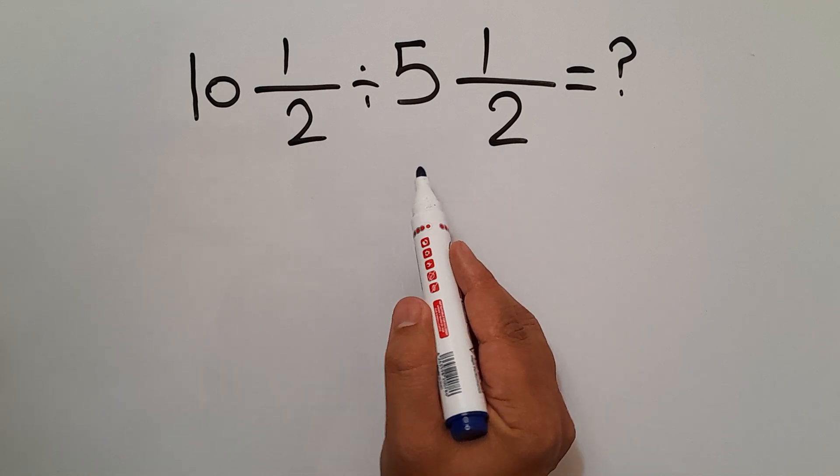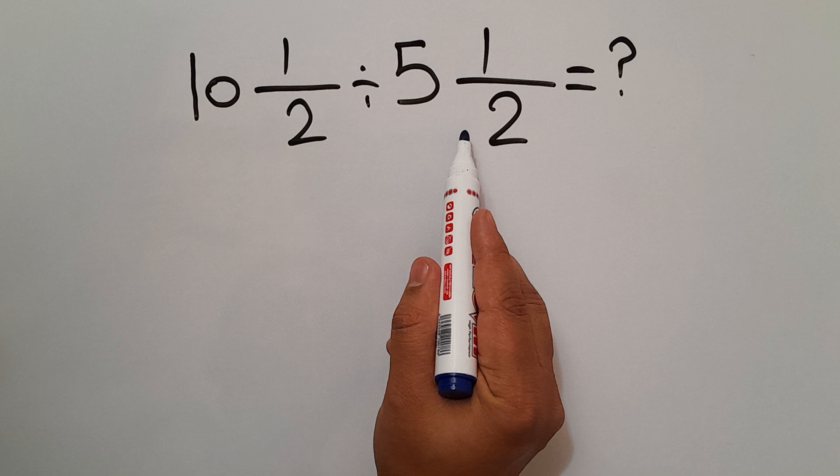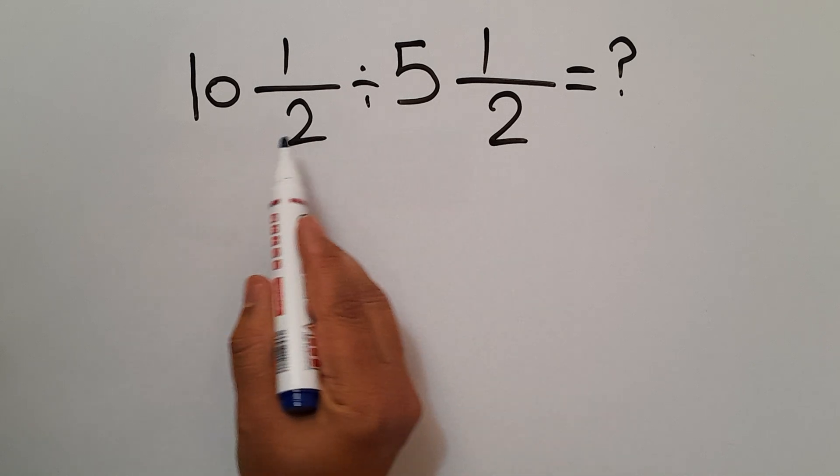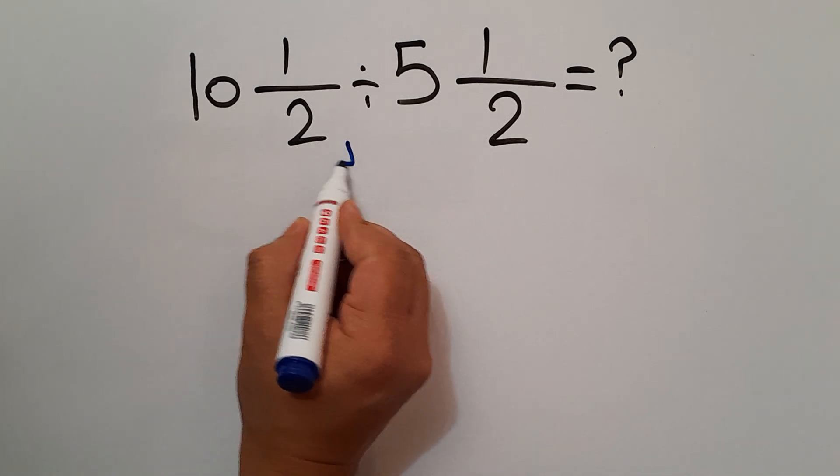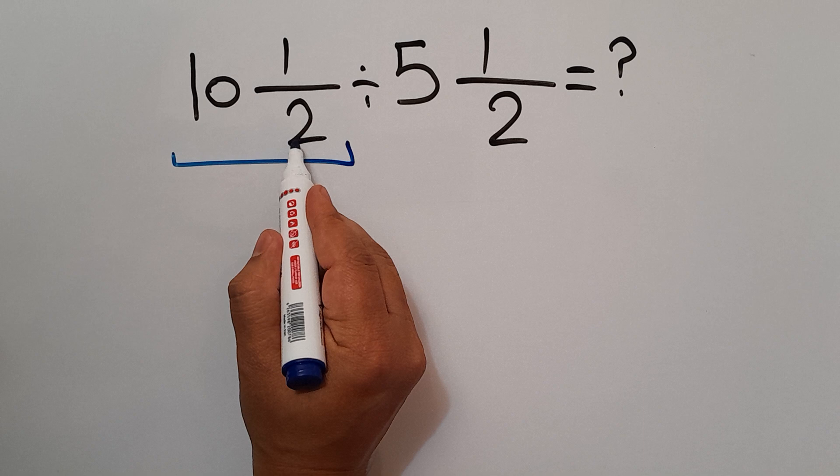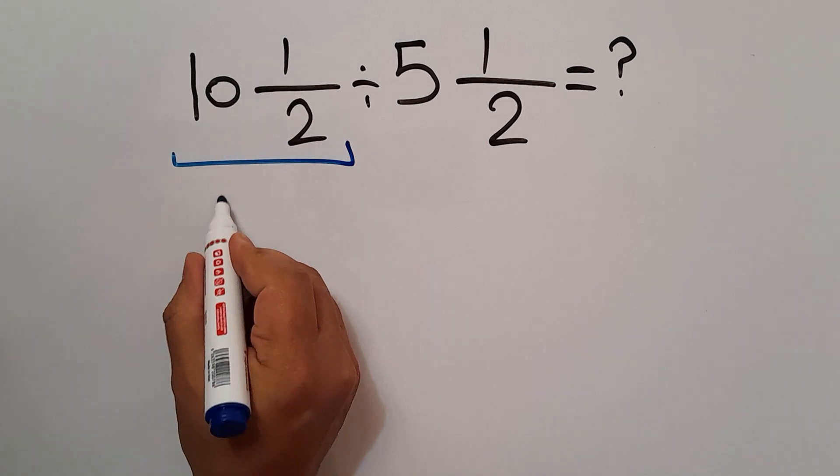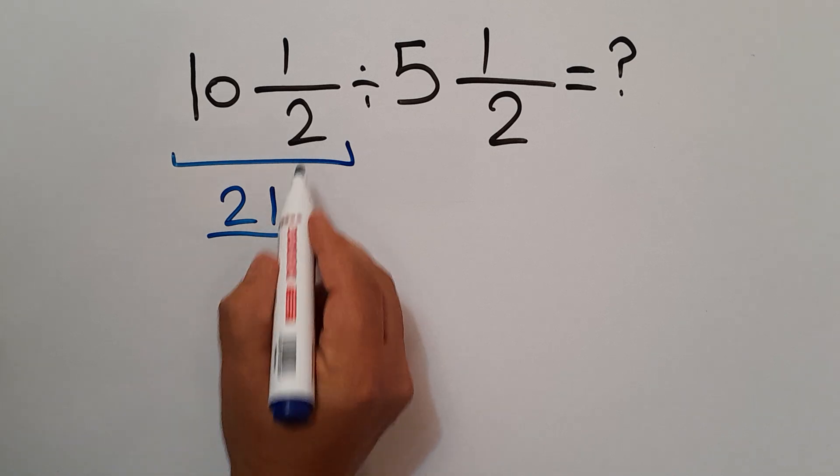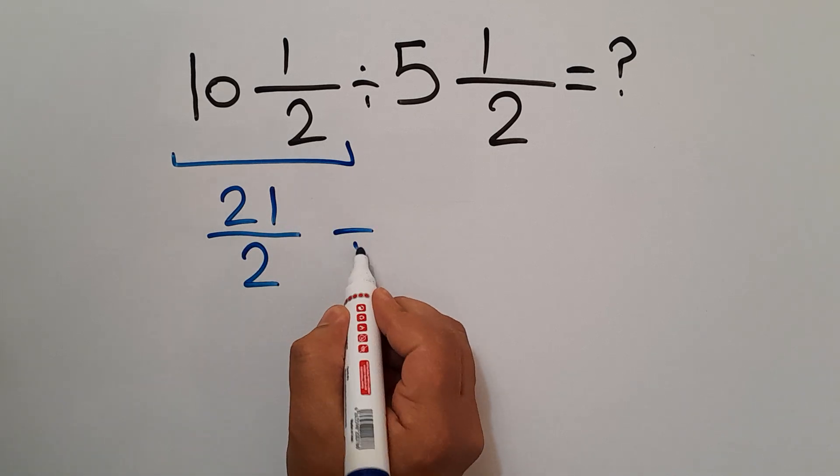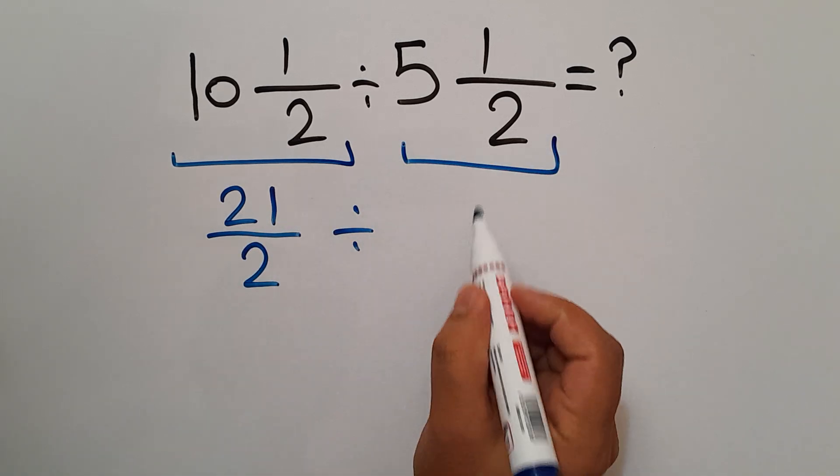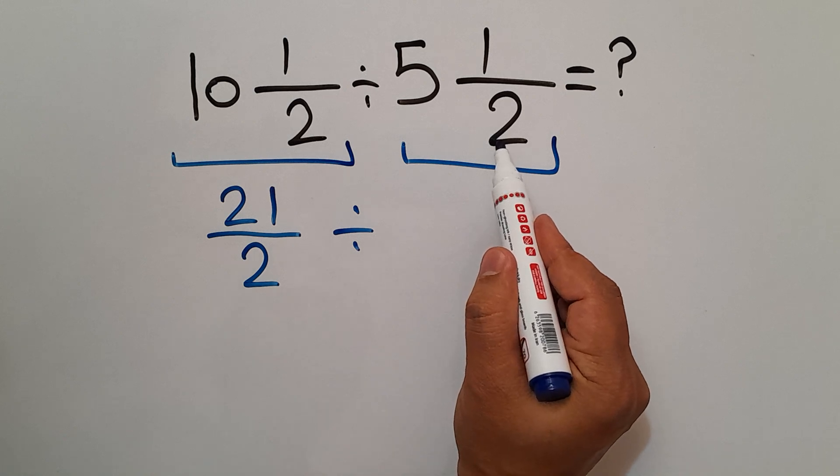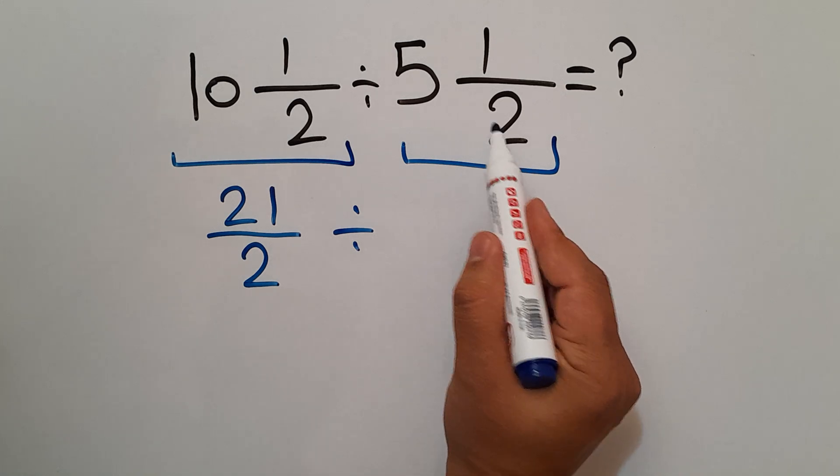First of all, let's convert these two mixed numbers to improper fractions. So 10 times 2 equals 20, and 20 plus 1 gives us 21, so 21 over 2. Divided by 5 times 2 equals 10, and 10 plus 1 equals 11, so 11 over 2.